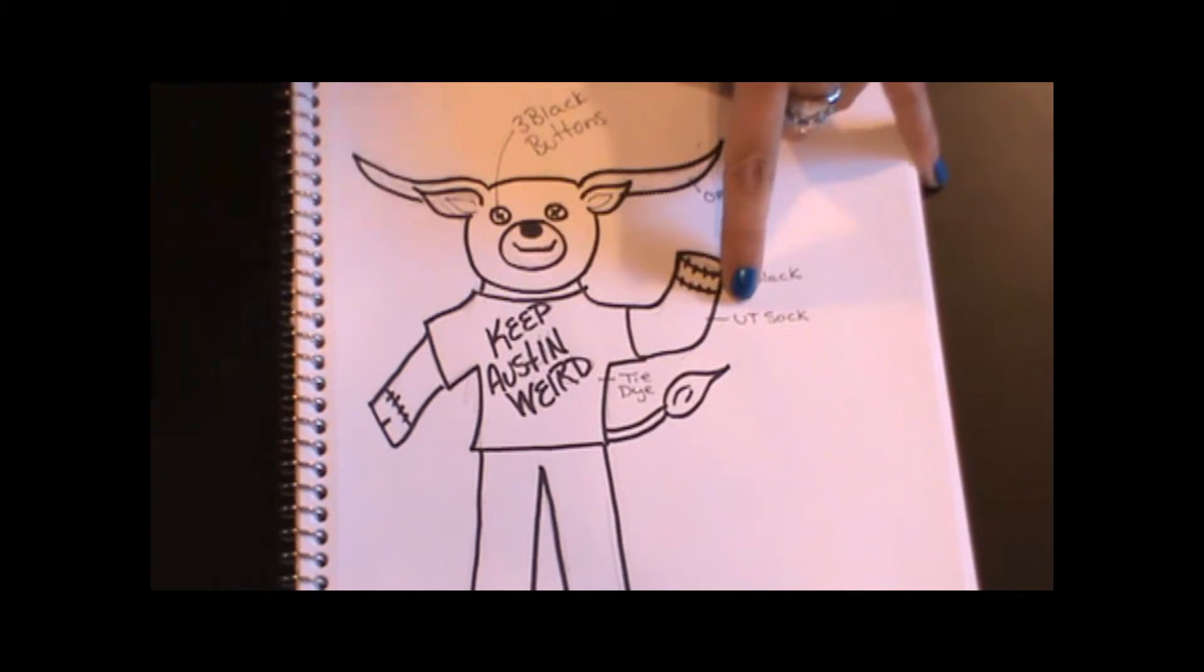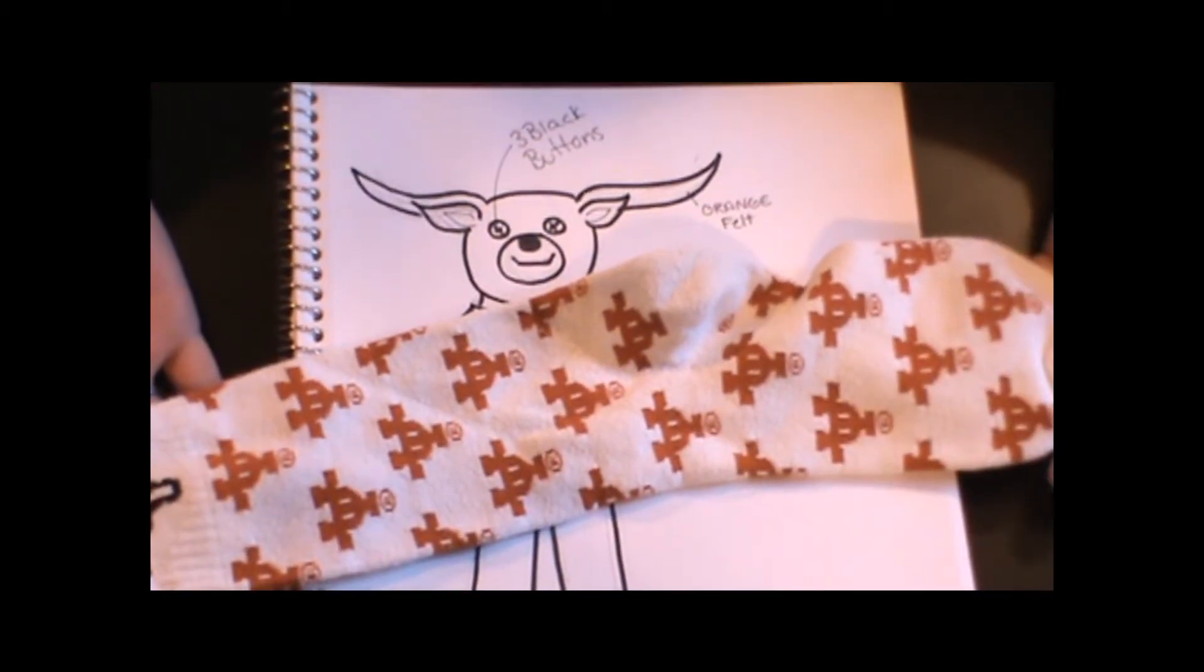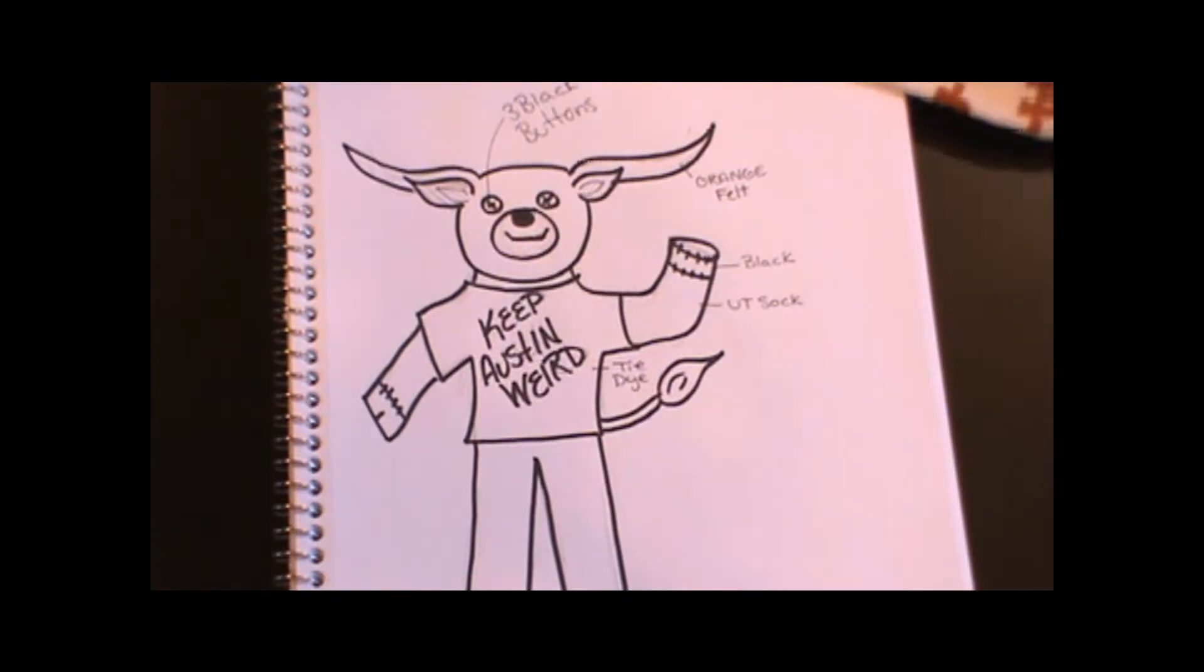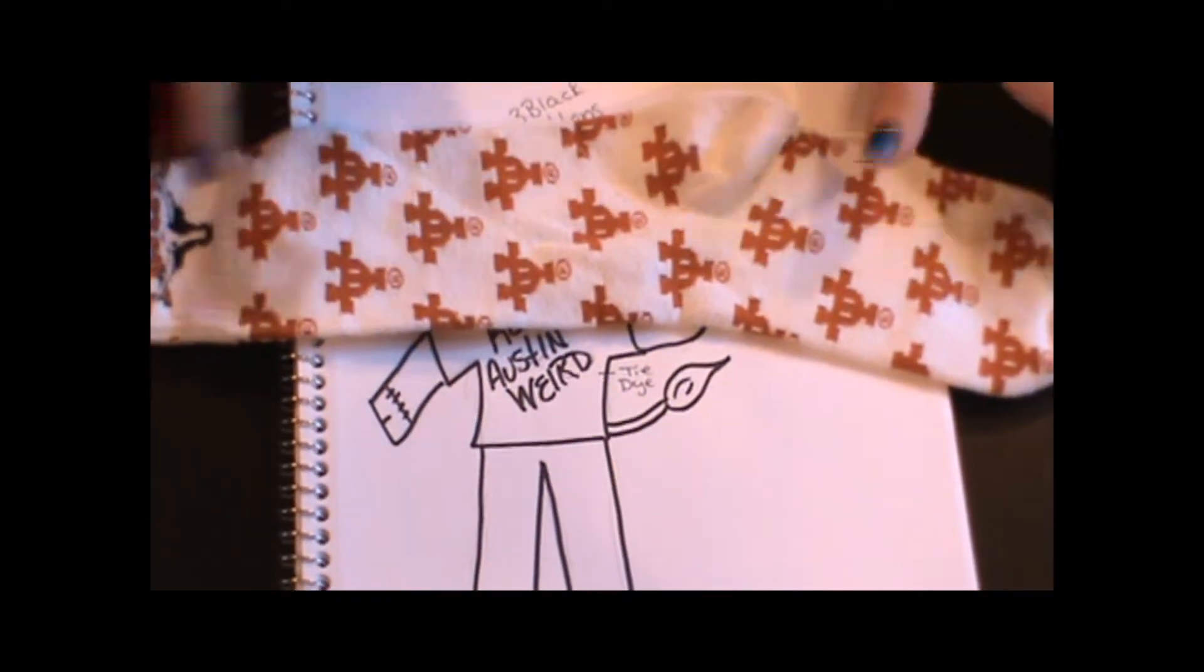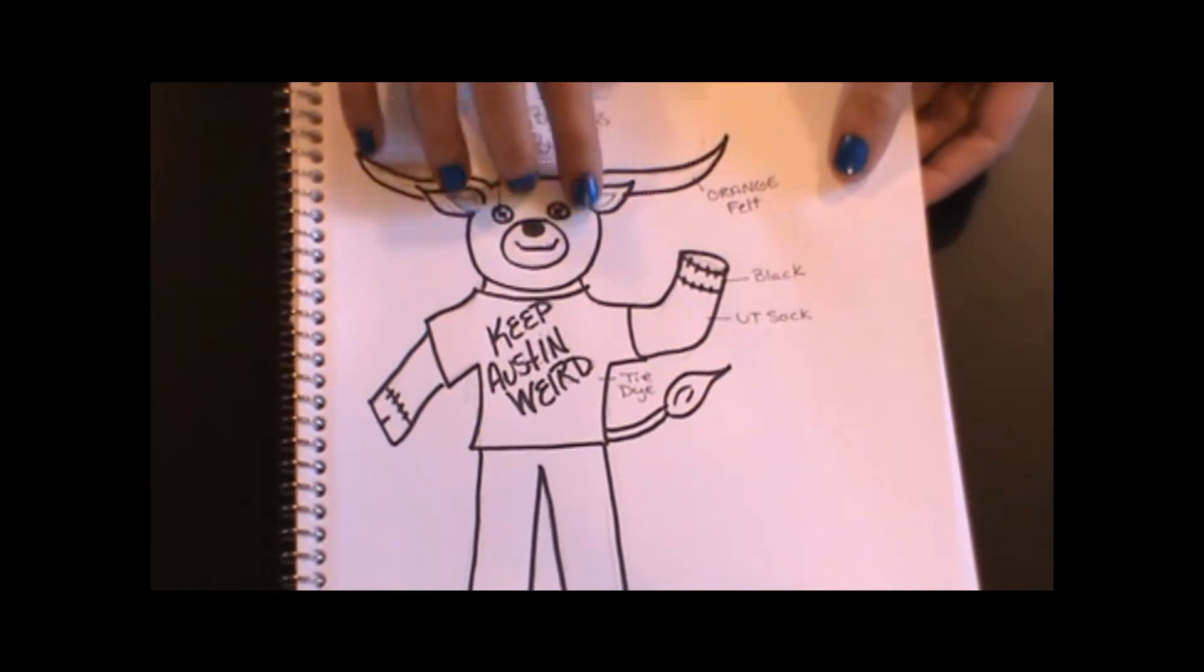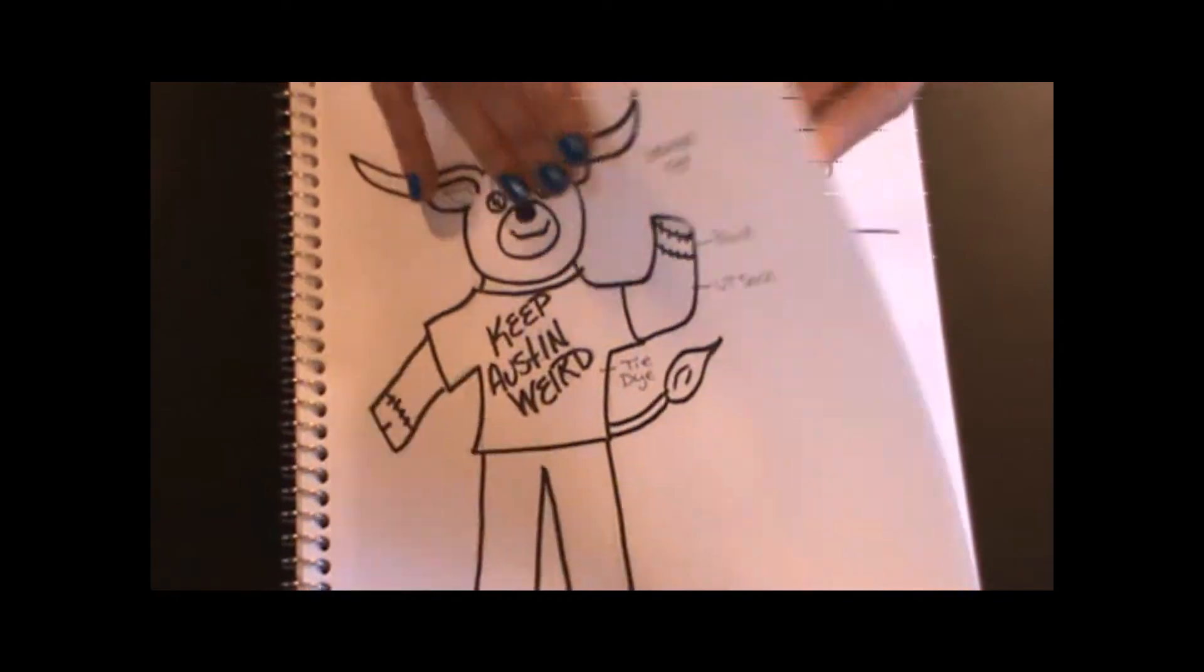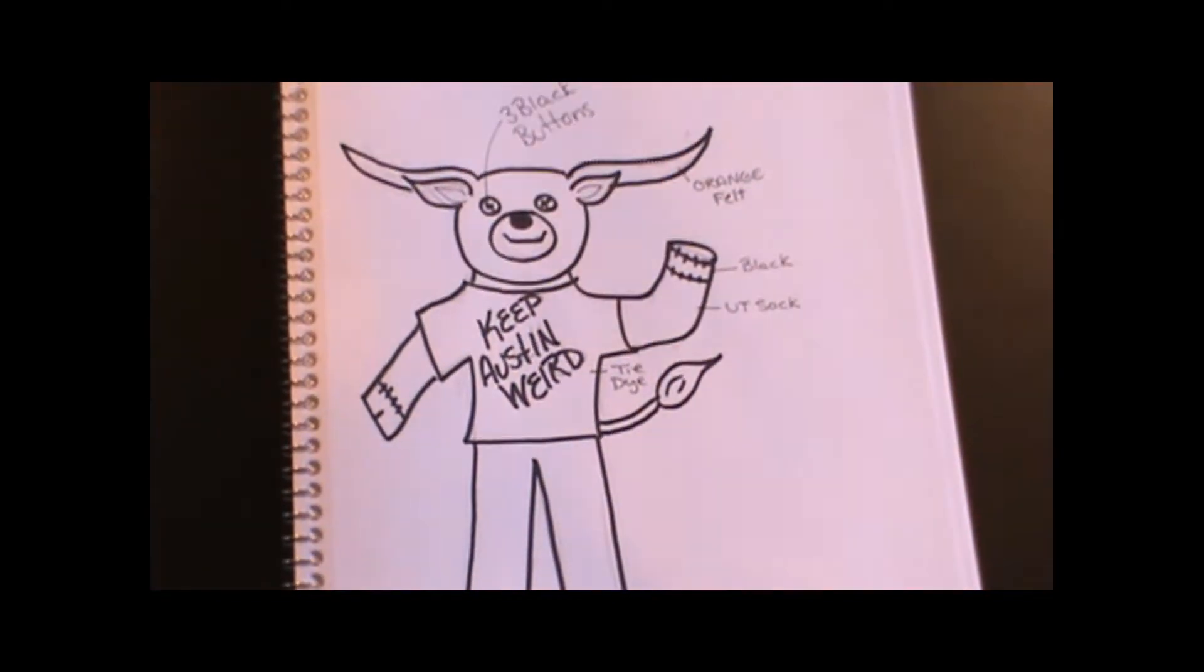I've labeled that I'm going to use a UT sock, which I actually have now. Don't necessarily plan on having it when you start out with your drawing - just have a general idea, and then when you come across your socks, as far as color, make final decisions then. I've decided I want to make a tie-dye shirt. Now I may or may not have that fabric, so we'll see how it turns out.